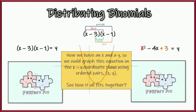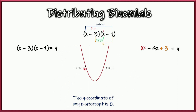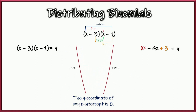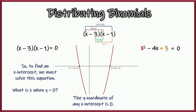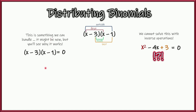The thing about x-intercepts is that the y-coordinate is always zero. You can see in this animation of various quadratic equations that for every single one, the x-intercepts are shown, and y is always zero. So when you're asked to find an x-intercept, what you're really being asked is: what is the value of x when y is zero? That's why we set the equation equal to zero. Now, in the unfactored form, we can't solve that with inverse operations — you can never isolate x because you have both x squared and x.